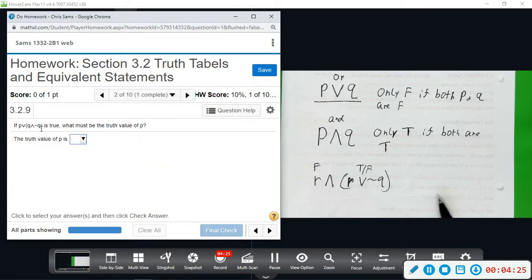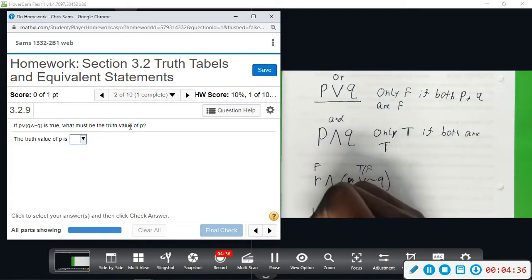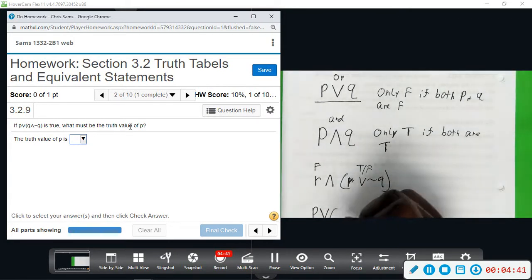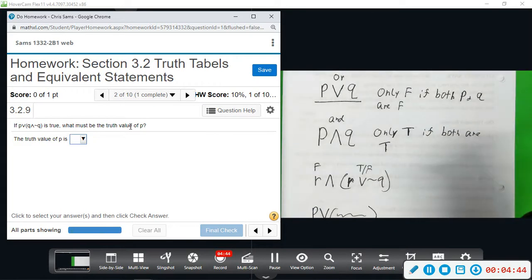Number two: if P OR this is true, what must be the truth value of P? So they're telling you you have P, you have OR something else. Doesn't matter what it is. And you know that this statement is true. What must be the truth value of P? This right here could be true or false - we don't know. But let's just look at it.